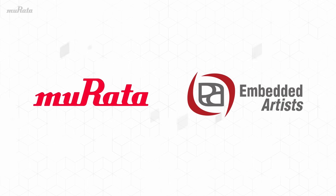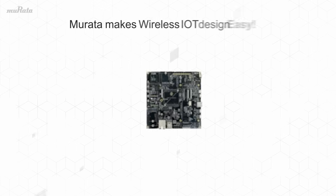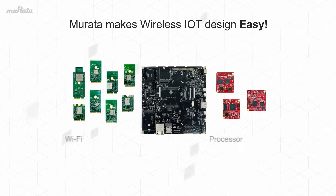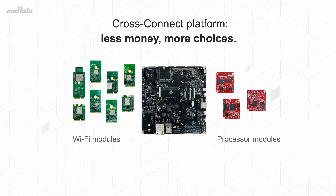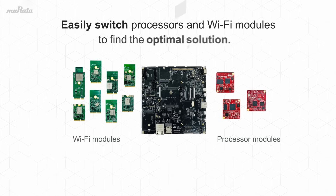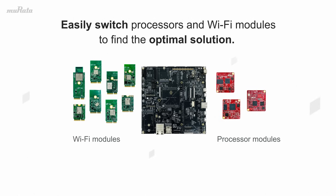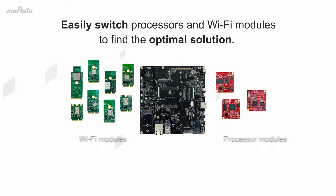Murata partnered with Embedded Artists to create the CrossConnect platform, a modular system that allows developers to easily switch between different processor SOMs and Wi-Fi modules with drivers already built in the processor SDK. This provides developers complete flexibility to evaluate different hardware combinations and find the optimal solution, and it's more cost-effective than separate EVKs and adapters for each platform.